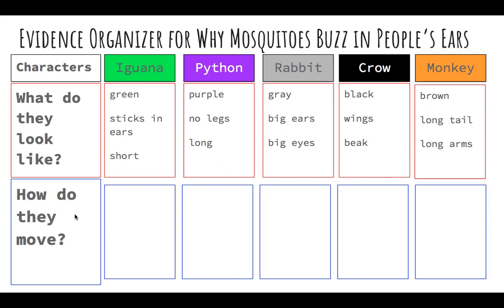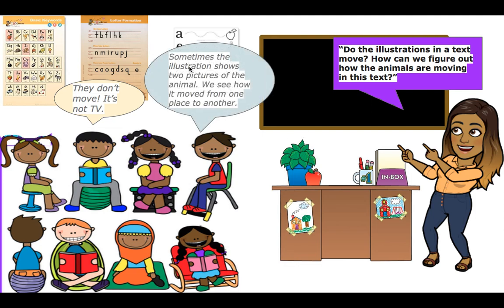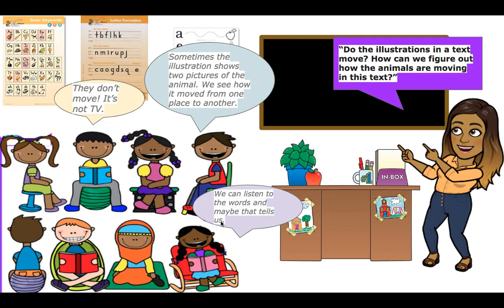Now we're going to figure out how the animals move. Do the illustrations in a text move? How can we figure out how the animals are moving? Can pictures in a book move? They don't move — it's not a TV. So how do they show us that they're moving? Sometimes the illustration shows two pictures of the animal and we see how it moved from one place to another — we discussed that in the last lesson, where we saw two rabbits but it was just the rabbit moving. We can also listen to the words, and maybe that tells us.